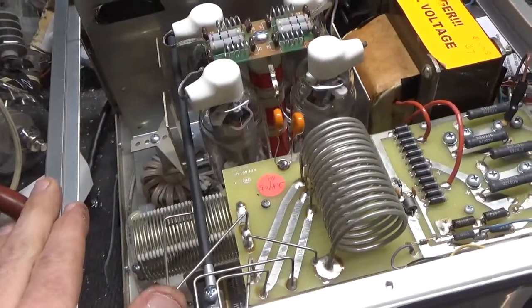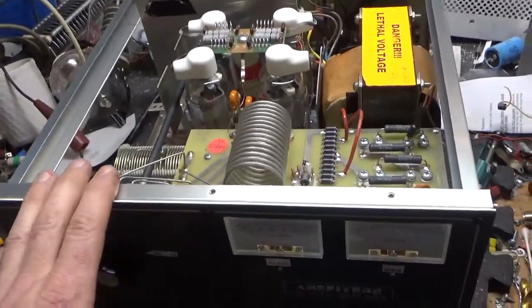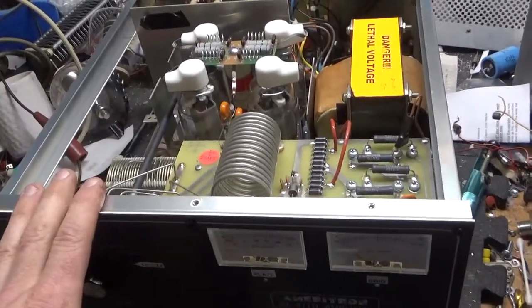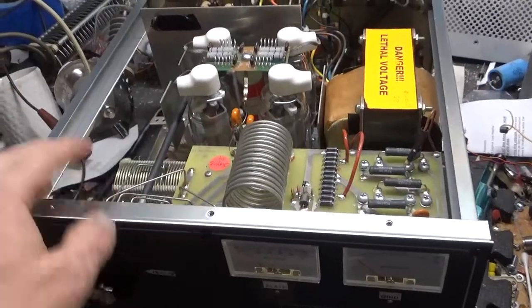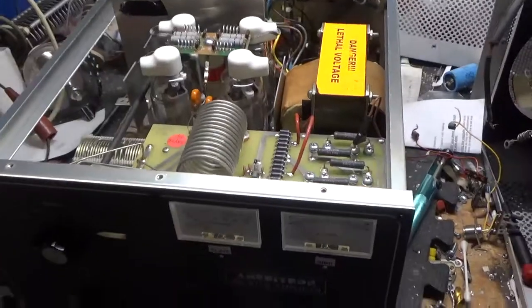800 watt PEP amplifier. A lot of people run on less than that, but always tune them up to 800 watts PEP, and then you can back it down by turning down the RF output on the transceiver.